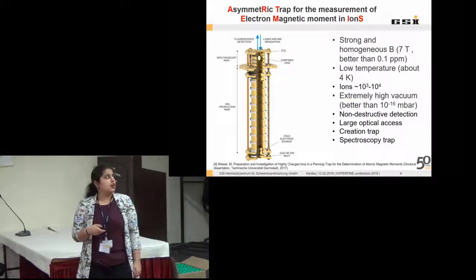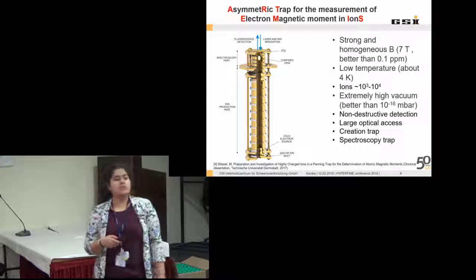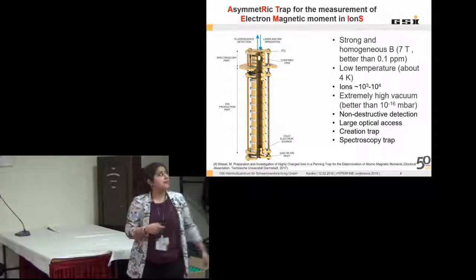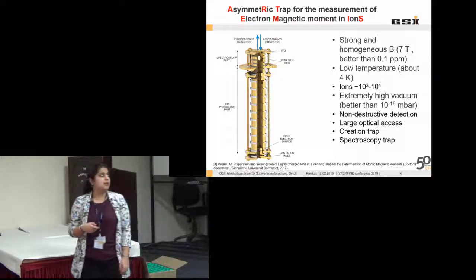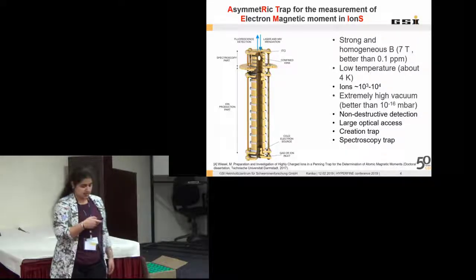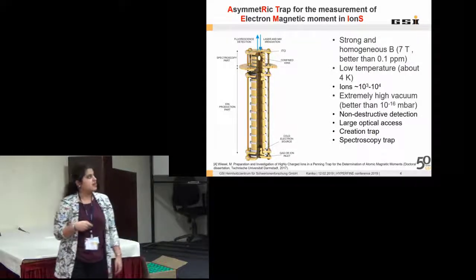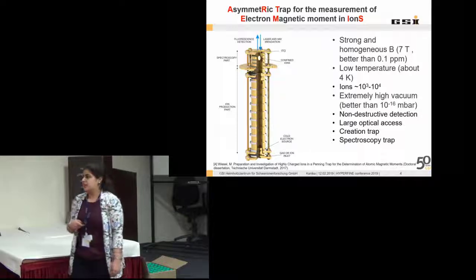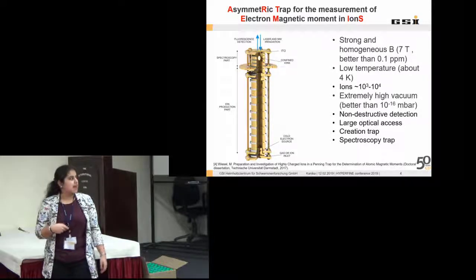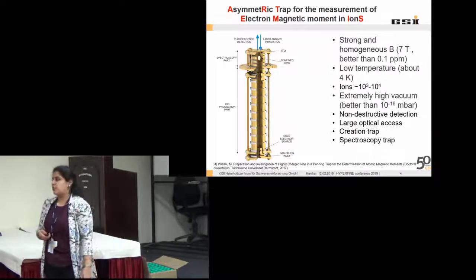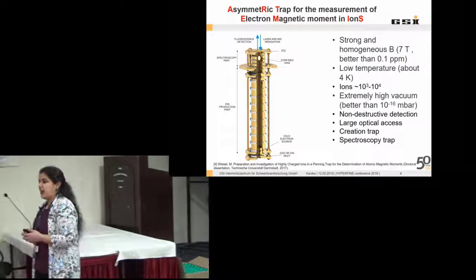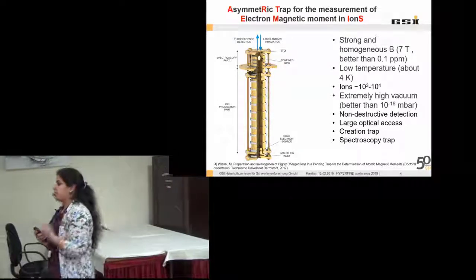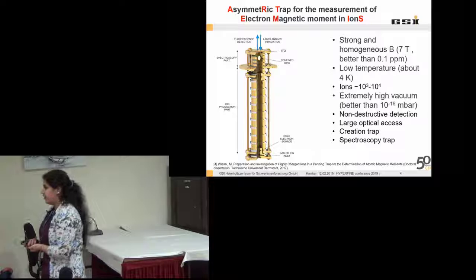I will talk about the Artemis experiment, that is the asymmetric trap for the measurement of electron magnetic moment in ions. This is a picture of the trap that we have in our experiment. This trap can be considered to be divided into two parts. The first is the ion production part, which we also call the creation trap.